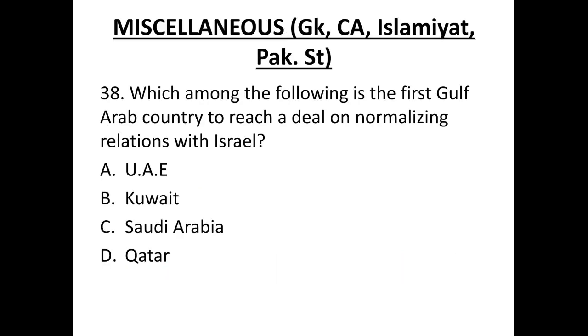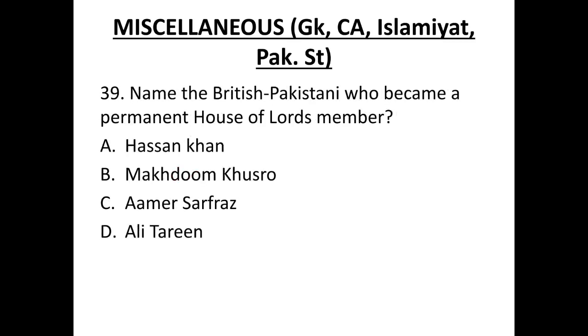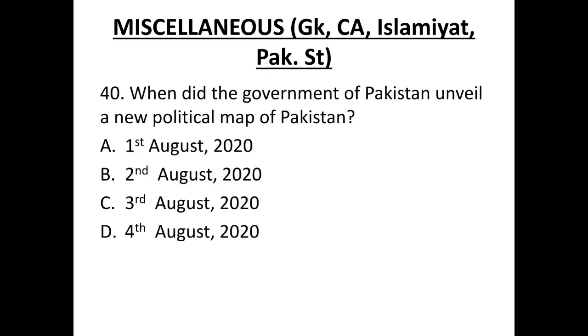Now, we move on to the miscellaneous part. Which among the following is the first Gulf Arab country to reach a deal on normalizing relations with Israel? The correct option is United Arab Emirates, UAE. Name the British Pakistani who became the permanent House of Lords member. The correct option is C. Amrser Faraz. When did the government of Pakistan unveil a new political map of Pakistan? It was just before the day, the Black Day, 5th August. So, the correct option is 4th August 2020.